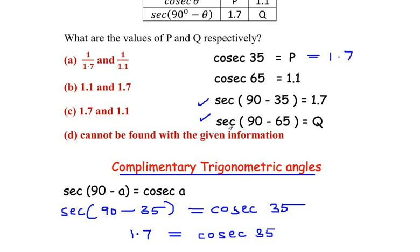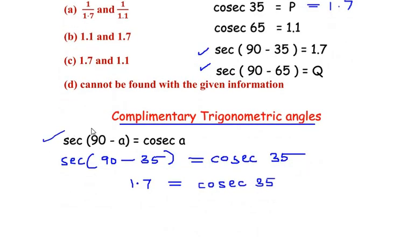Similarly we are going to use this fourth value now and use this complementary trigonometric angles formula. So now we take sec of 90 minus 65.